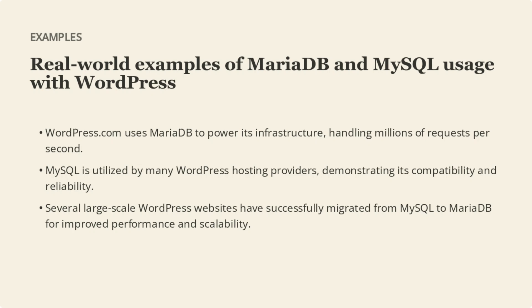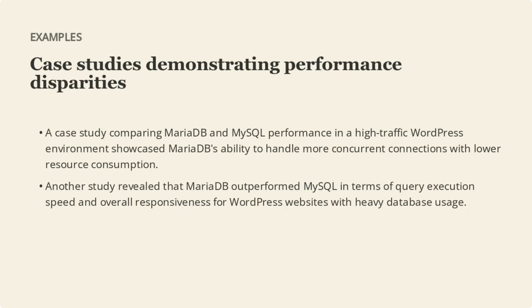WordPress.com relies on MariaDB to power its infrastructure, handling millions of requests per second. MySQL is widely used by many WordPress hosting providers, showcasing its compatibility and reliability. Several large-scale WordPress websites have successfully migrated from MySQL to MariaDB, resulting in improved performance and scalability. In a case study comparing performance in a high-traffic WordPress environment, MariaDB demonstrated the ability to handle more concurrent connections with lower resource consumption, and outperformed MySQL in query execution speed and overall responsiveness.